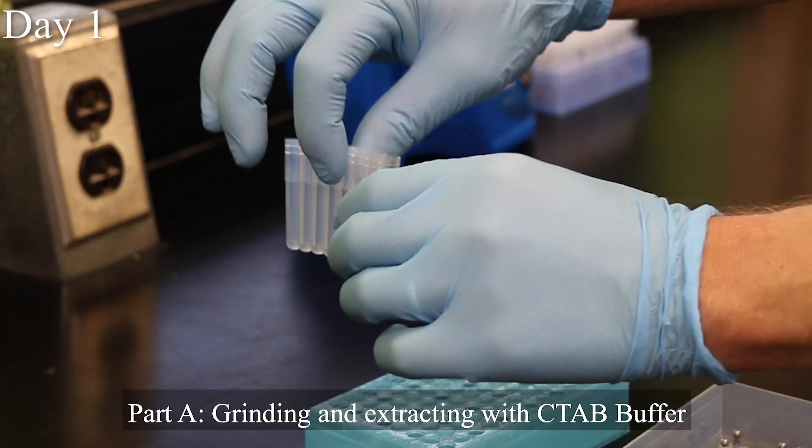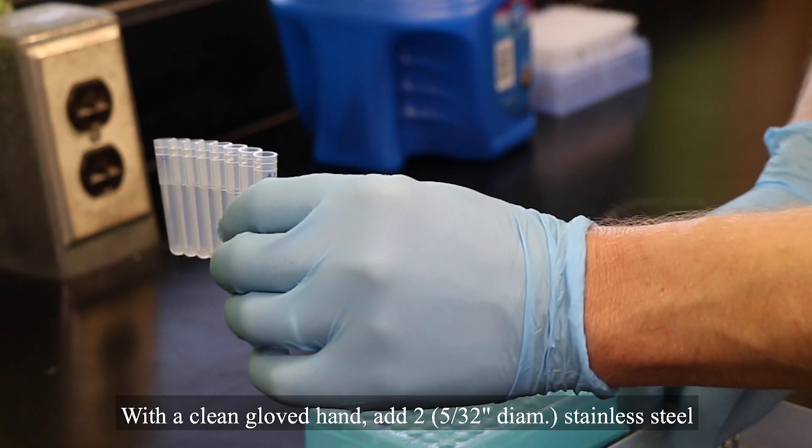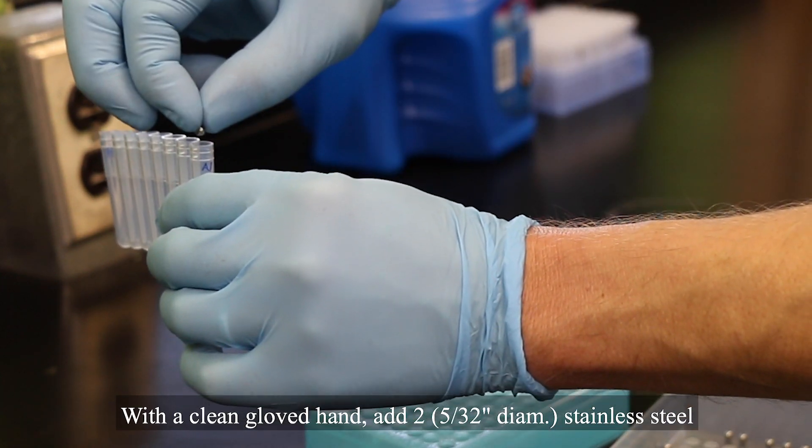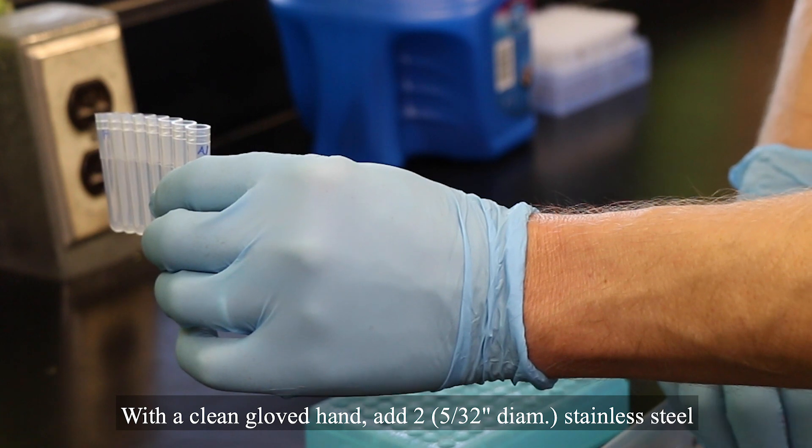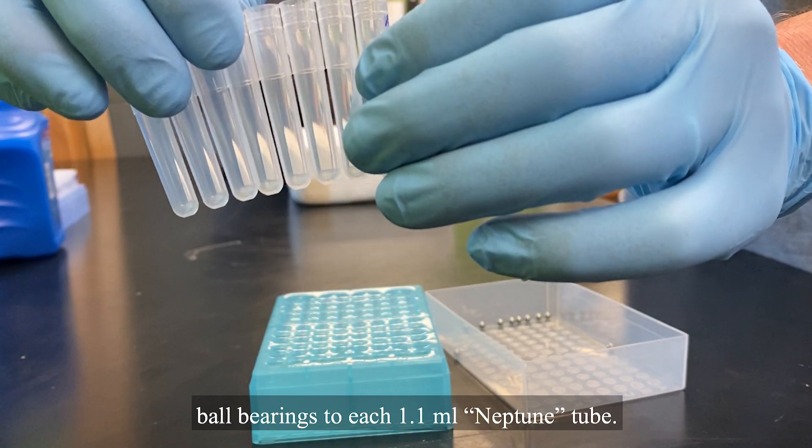Part A, grinding and extracting with CTAB buffer. With a clean gloved hand, add two 5-32 diameter stainless steel ball bearings to each 1.1 mil Neptune tube.